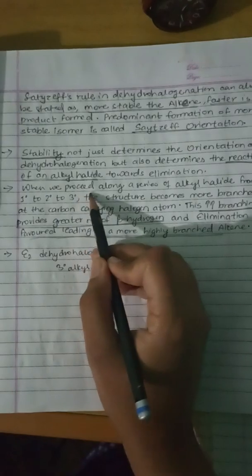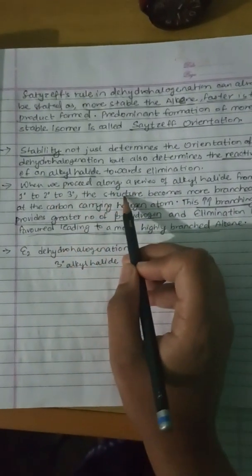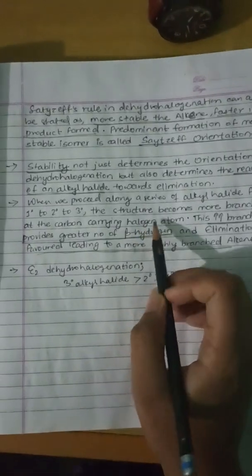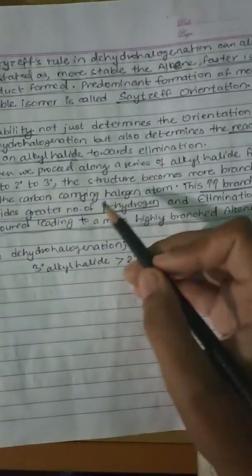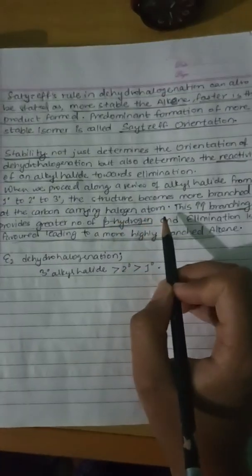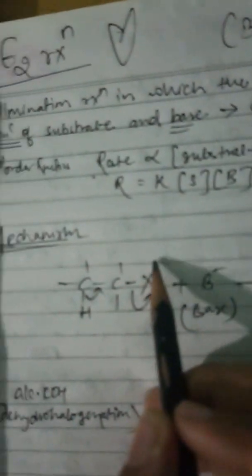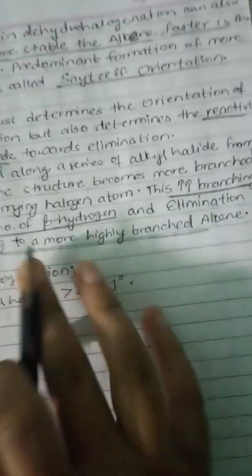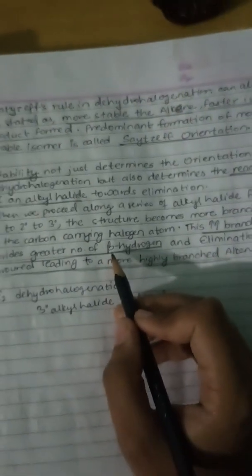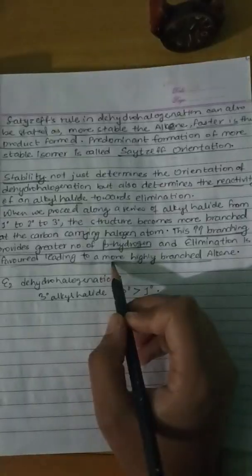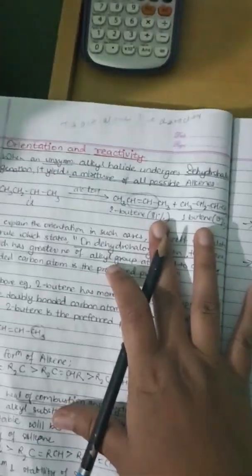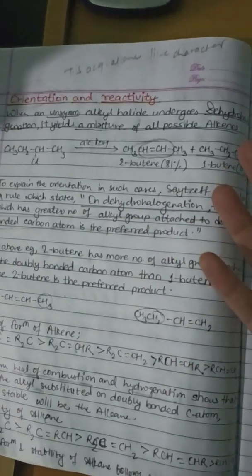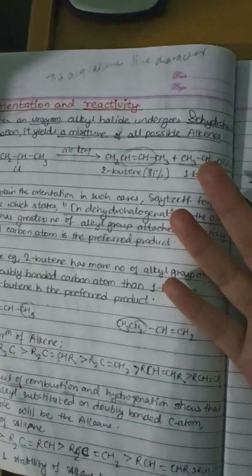As we proceed along a series from primary to secondary to tertiary alkyl halides, the structure becomes more branched. The increase in branching provides a greater number of beta hydrogens — hydrogen atoms attached to the beta carbon adjacent to the alpha carbon bearing the leaving group. More beta hydrogens lead to more elimination, giving more highly substituted alkene products. Zaitsev's rule follows orientation and reactivity — the more stable alkene is the preferred product.